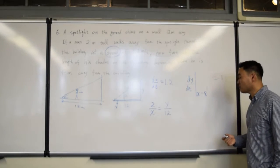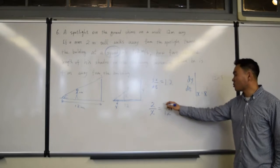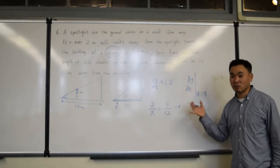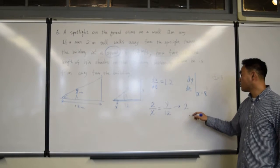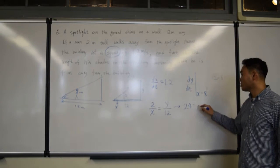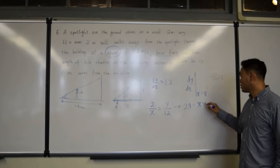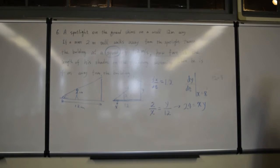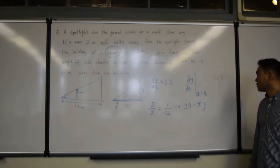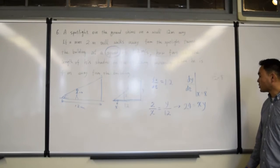So, we have this equation, which says that if I cross multiply, see if you have ratios, you can cross multiply, right? If I cross multiply, 24 equals x times y, okay?